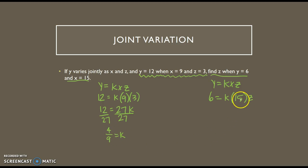So now I'm going to take that k and plug it back in over here for k. Okay, so I have 6 equals 4 ninths times 15 times z, and I want to solve for z. So I'll start with doing 4 ninths times 15, which would give me 4 times 15 is 60. So 60 ninths, and I can simplify that a little bit just to make my math a little easier. 3 goes into both of these, so I end up with 20 thirds.